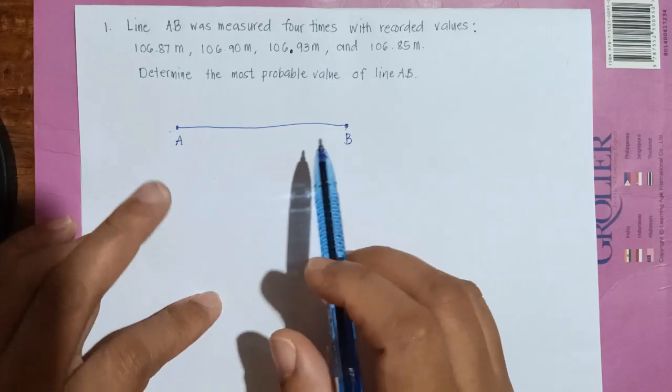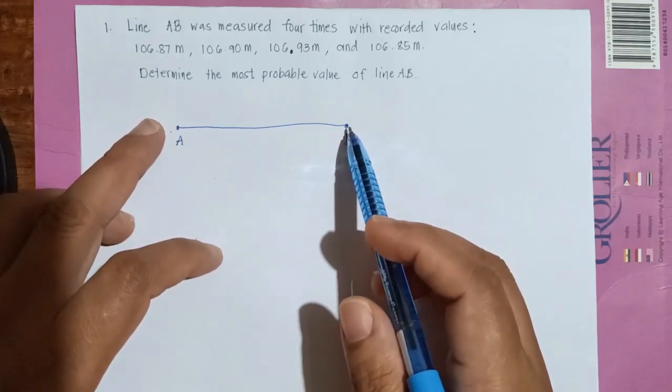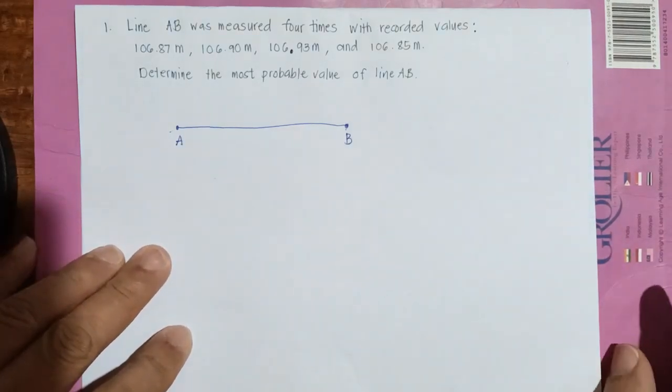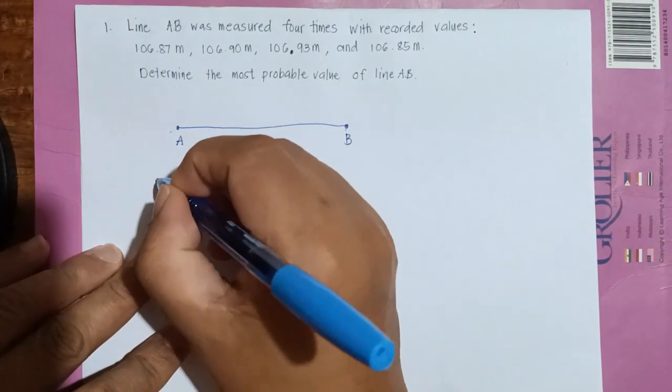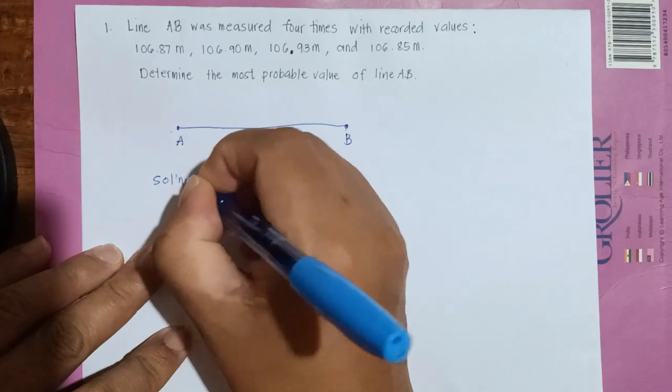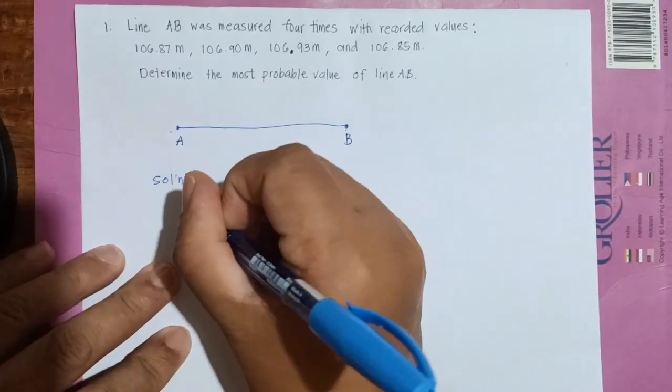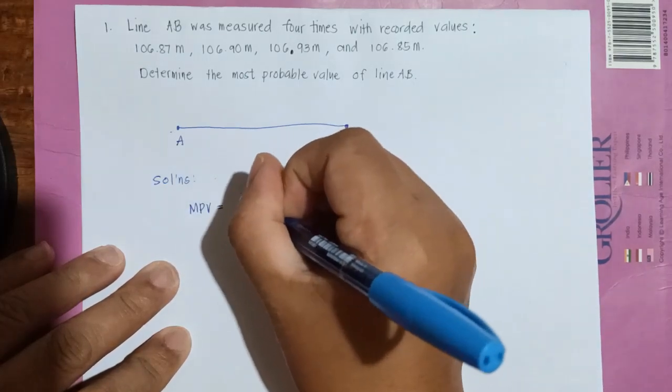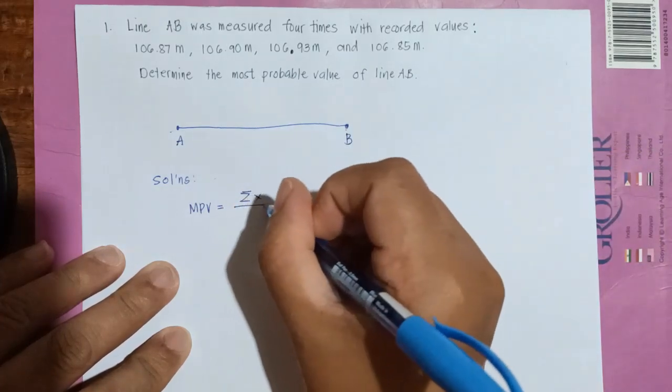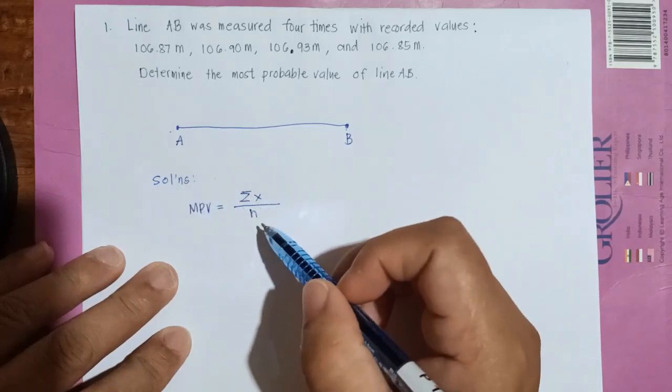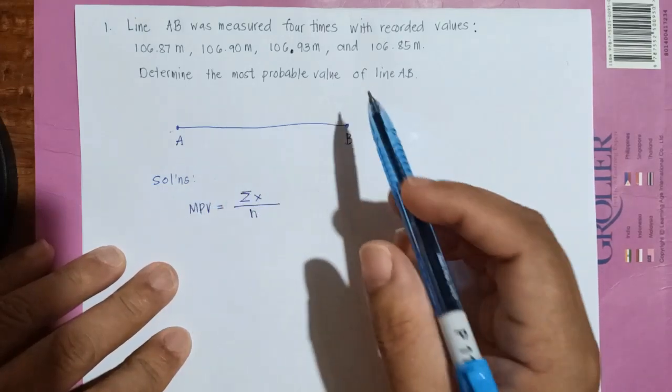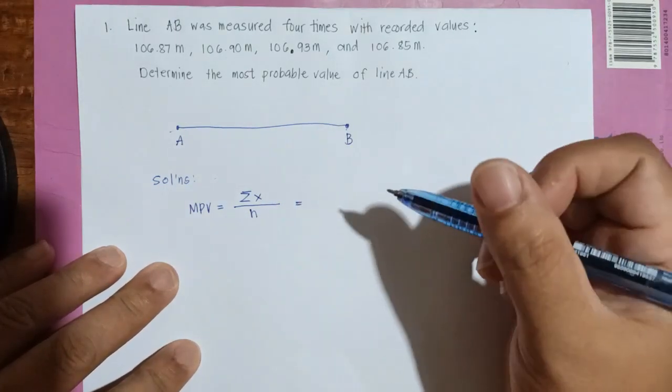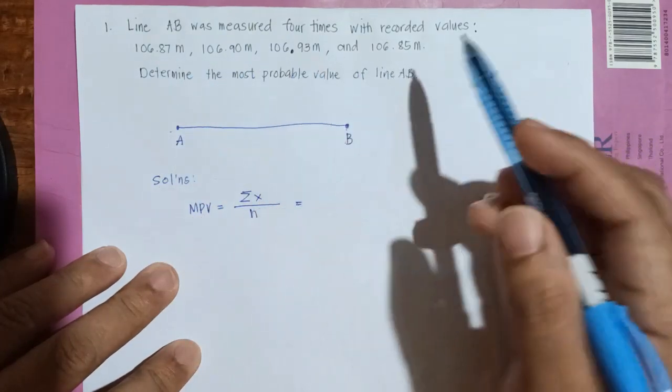It's because it's only one quantity, one required quantity, but it's measured repeatedly. So to solve that we have the formula: MPV is equal to the summation of measurements divided by the number of measurements. So if you look at this formula, this is basically the average of all the measurements.